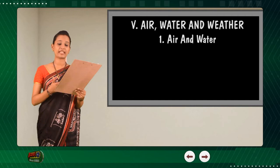Water is a transparent fluid which forms the world's streams, lakes, oceans and rain, and it is the major constituent of the fluids of living things. Water on earth moves continuously through the water cycle of evaporation, transpiration, condensation, precipitation and runoff, usually reaching the sea.